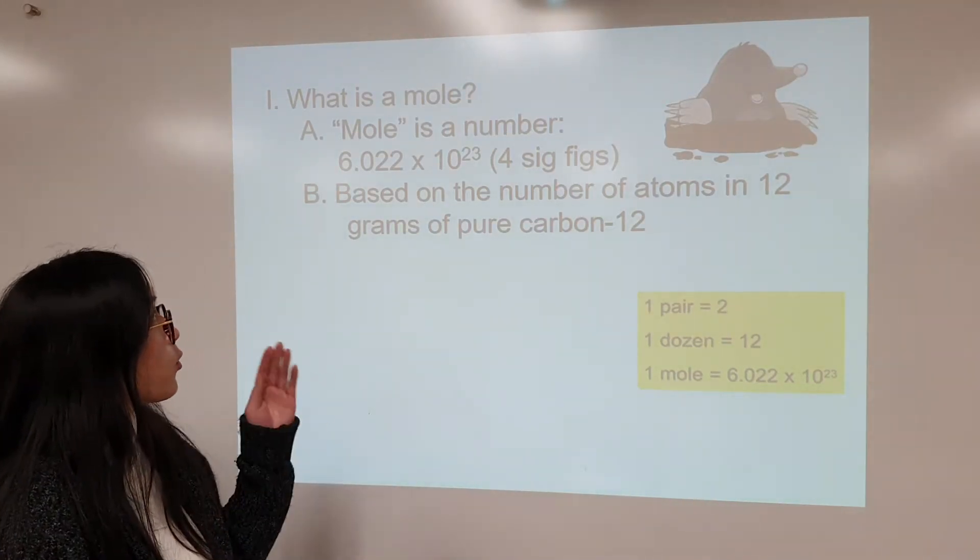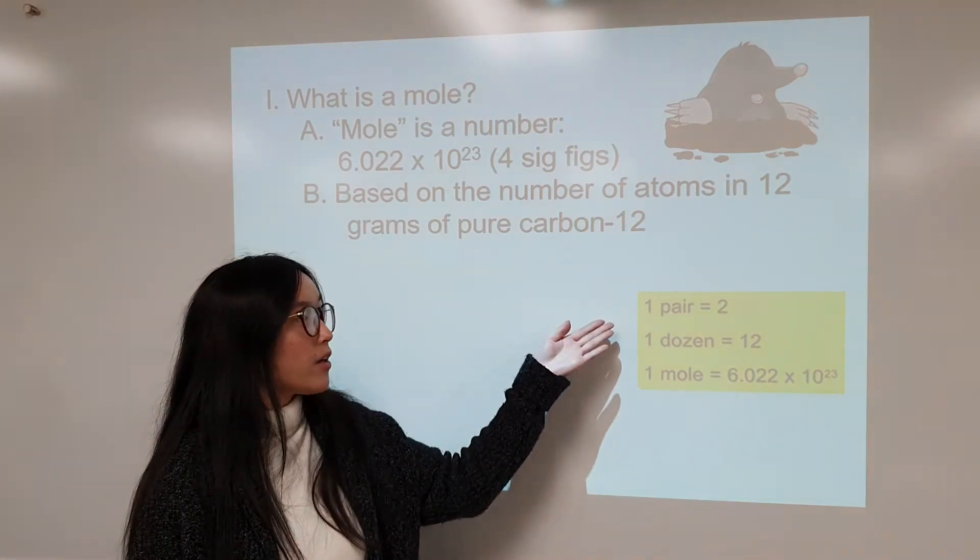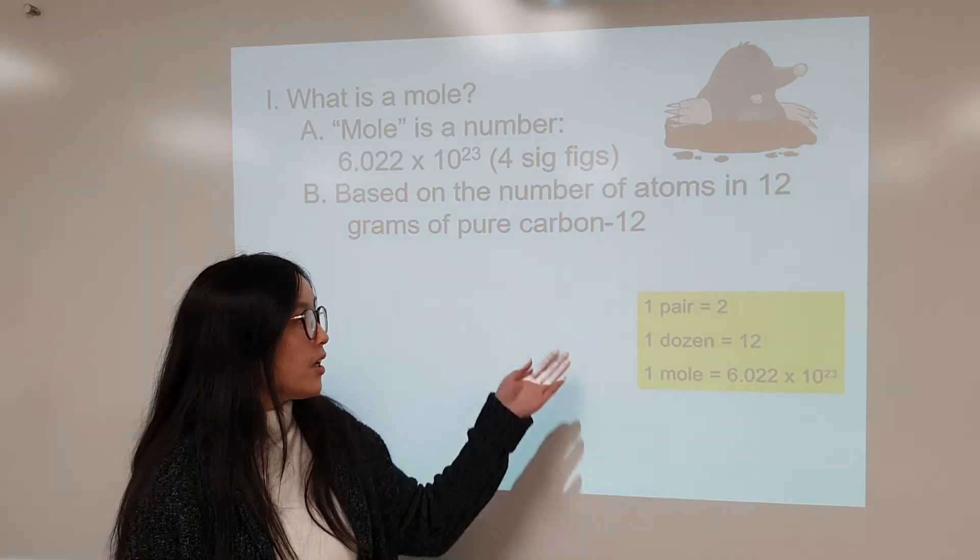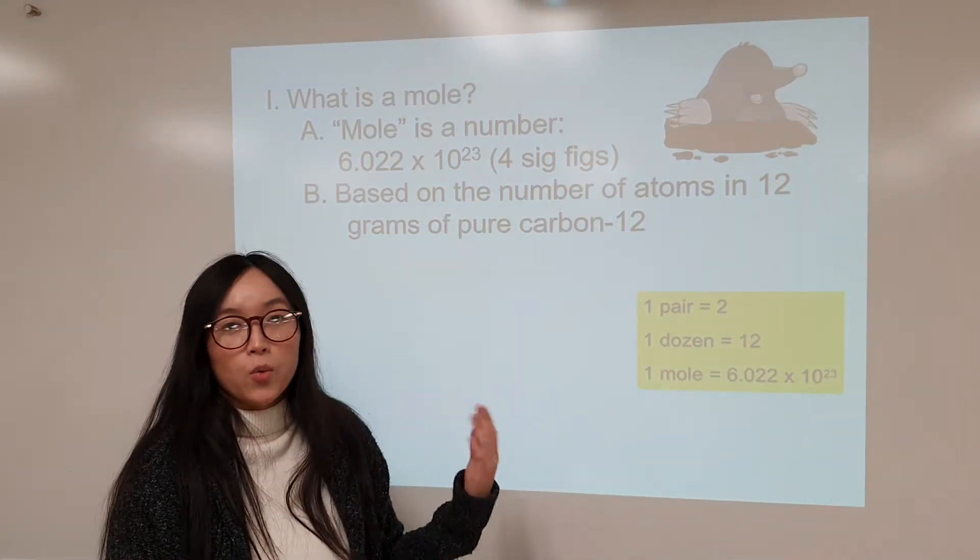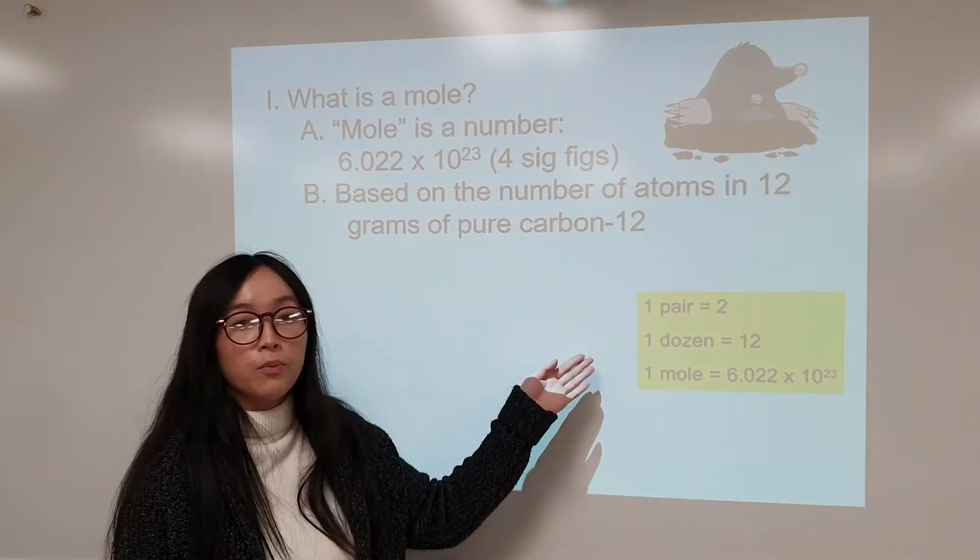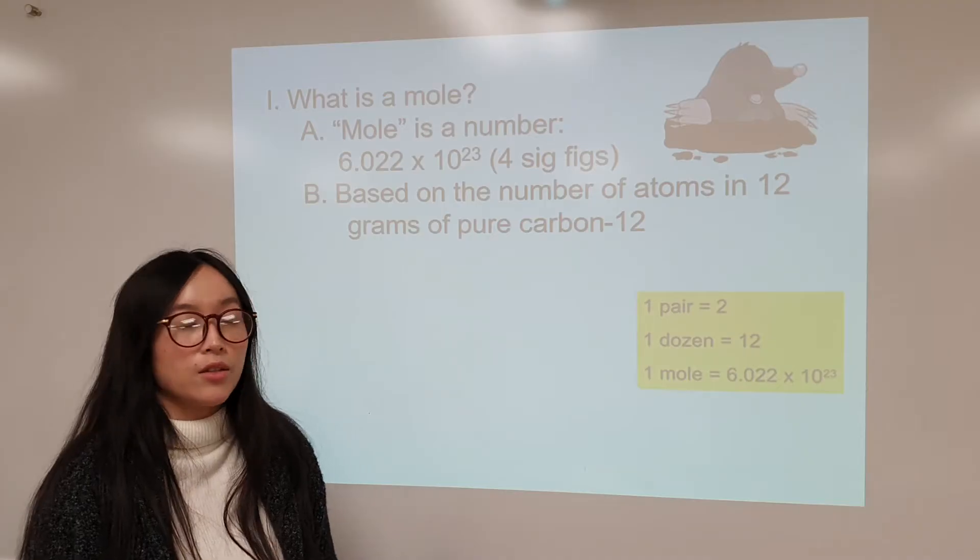And essentially, since one mole is a number, it is similar to if you have one pair, it means 2 of something. If you have a dozen of something, one dozen, it means 12 of something. So for example, when you have one dozen of eggs, it's 12 eggs. Similarly, one mole is 6.022 times 10 to the 23rd.